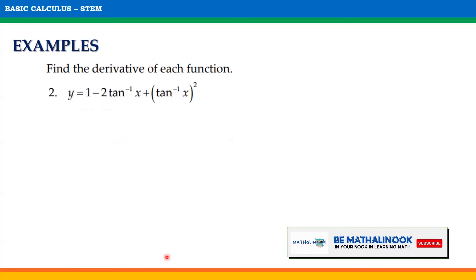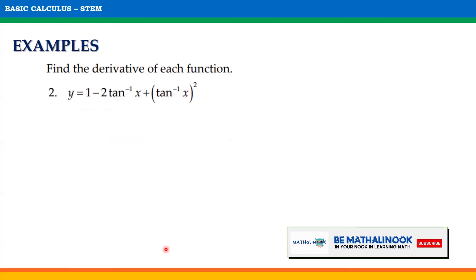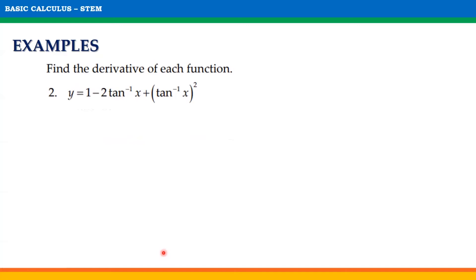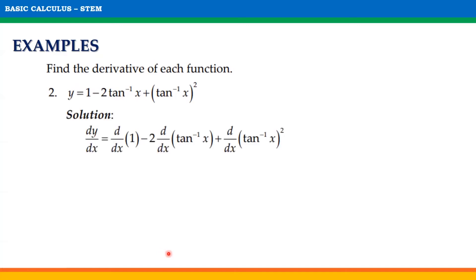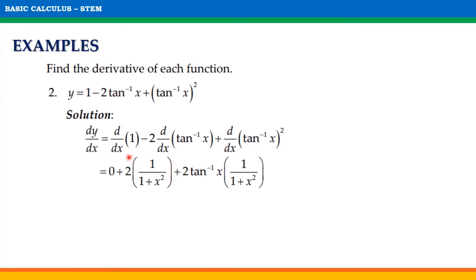Another example, find the derivative of y = (1 - 2·arctan(x) + arctan(x))². To find its derivative, we will get dy/dx = d/dx of 1 minus 2 times d/dx of arctan(x) plus d/dx of (arctan(x))². d/dx of 1 = 0, and d/dx of arctan(x) using the theorem is equal to 1 / (1 + x²).